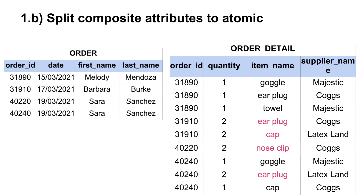Once we're done with the split, we will have two tables with more attributes than before. In the order table, we now have first name and last name as two separate columns. Also notice that I have standardized the item names in the order detail table to be in singular form, shown in red. Earlier, since the quantity was 2, the items were listed as 'ear plugs', 'caps', 'nose clips'. But now I have put them in singular form.